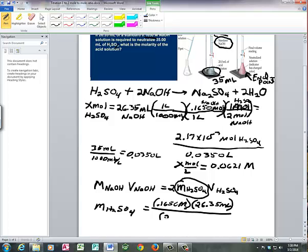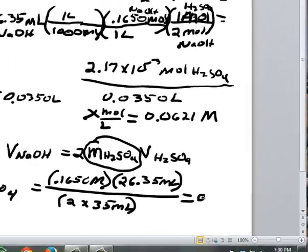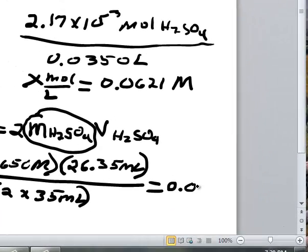Then we're going to divide by 2 times the volume of the H2SO4. That's going to be 2 times 35 milliliters, which is 70. When we work that math out, we wind up with exactly the same answer, 0.0621 molar in H2SO4.